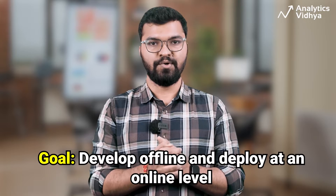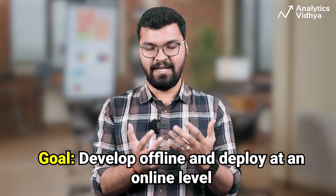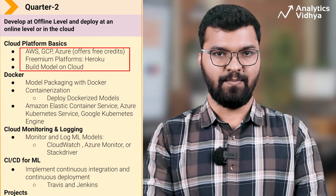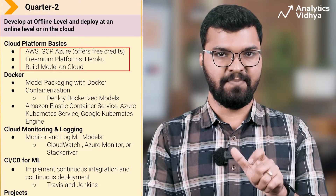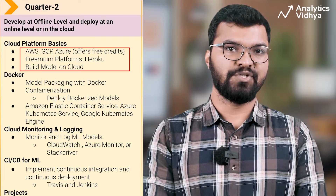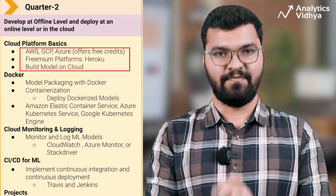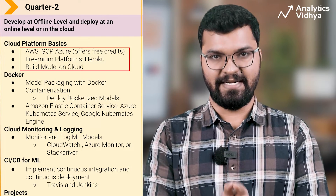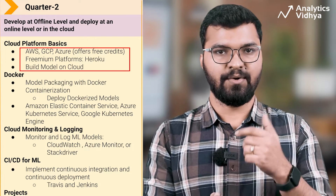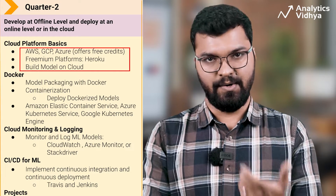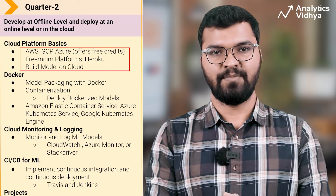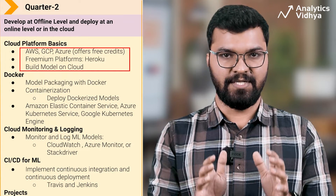In Quarter 2, the goal is to deploy at an online level — in the cloud. To start, learn any one of the major cloud platforms: AWS, GCP, or Azure. These platforms generally offer free credits to get started. Or you may go with a freemium platform like Heroku. Basically, choose a platform that aligns with your business requirements and future goals.